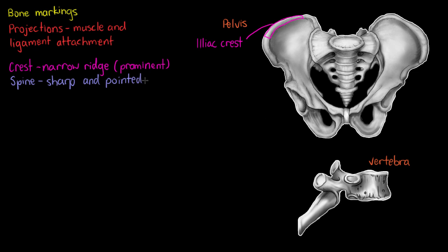The next marking is called a spine — not the spine on your back, but a spine bone marking. It is often sharp, pointed, and slender. Marking out the back of the ischium here, we can see it is quite sharp and pointing toward the posterior side of the body. That will be called the ischial spine — ischial being the abbreviation of ischium, followed by our bone marking name, spine.